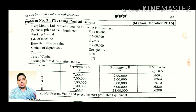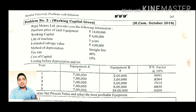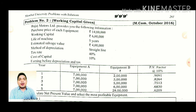You have to solve this second problem. The budget is limited, and the following information is provided: the purchase price of each equipment is 14 lakh, working capital is 6 lakh, the estimated salvage value is 4 lakh, the method of depreciation is straight line at 40%, and the cost of capital is 10%.